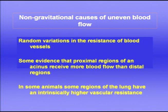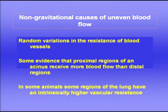Although gravity has a very important effect on blood flow distribution, there are other factors. At any particular level in the lung, there are random variations in vessel geometry and resistance, causing some uneven blood flow at a given level. There is also evidence that in the acinus, proximal regions receive slightly more blood flow than distal regions, and in some animal preparations, certain regions appear to have an intrinsically higher vascular resistance.